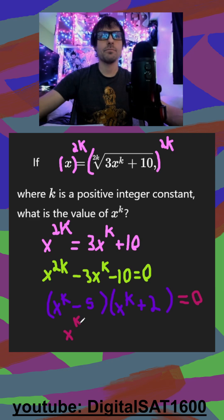So it's just x to the k is equal to 5 and negative 2. And it actually can only be positive 5 here, because if we say, since k is a positive integer constant, let's say k is equal to 1.